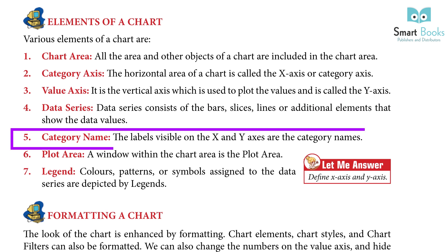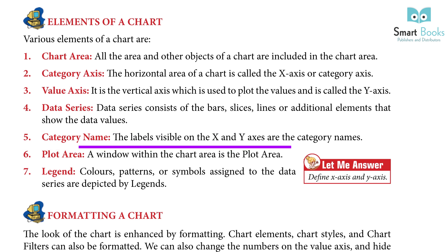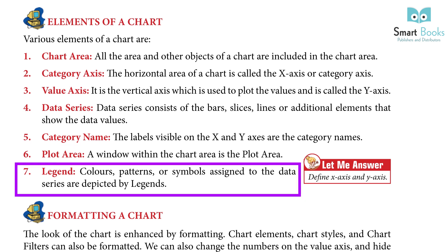5. Category Name — the labels visible on the X and Y-axis are the category names. 6. Plot Area — a window within the chart area is the plot area. 7. Legend — colors, patterns, or symbols assigned to the data series are depicted by legends.